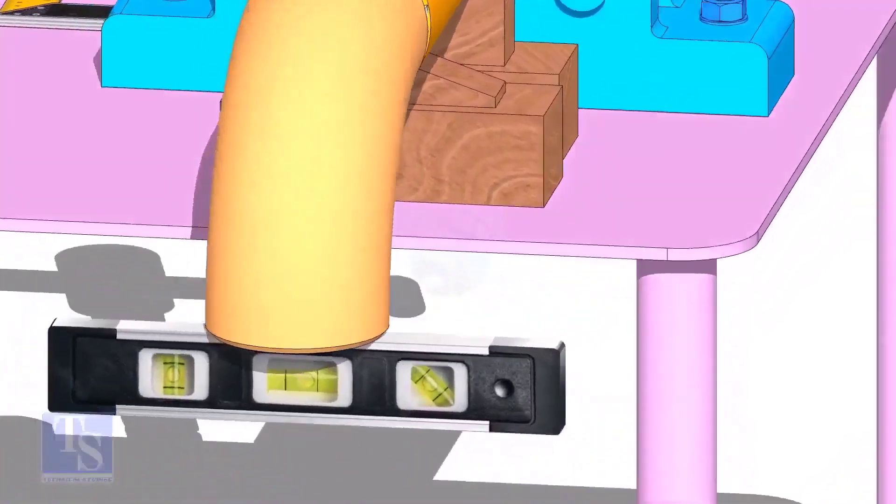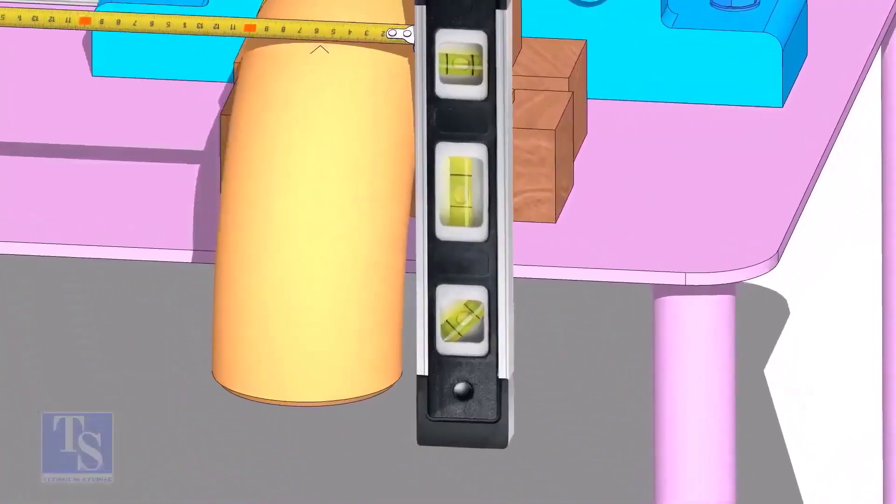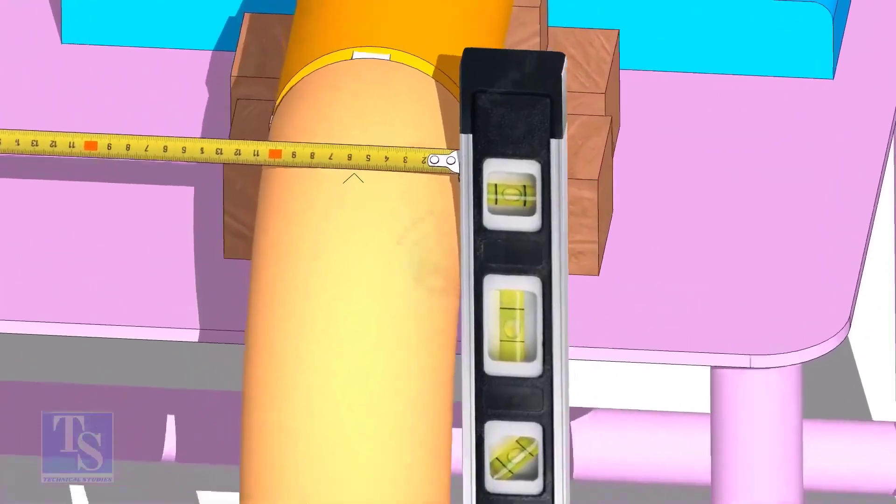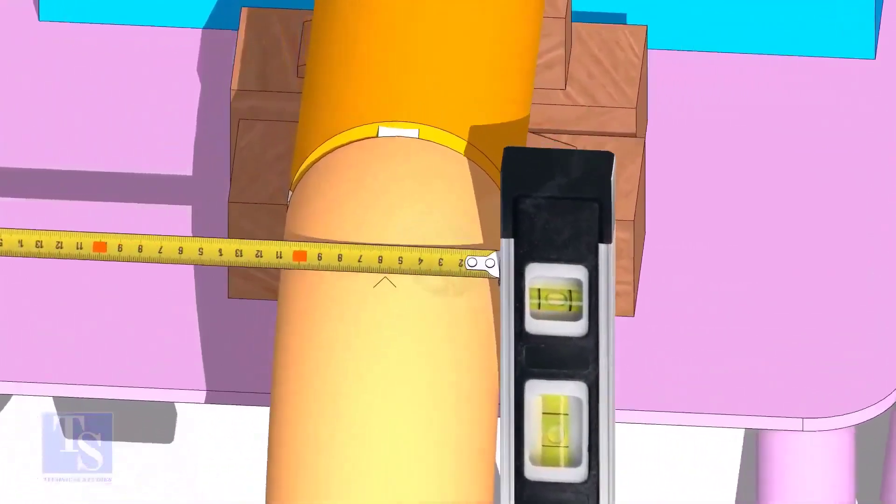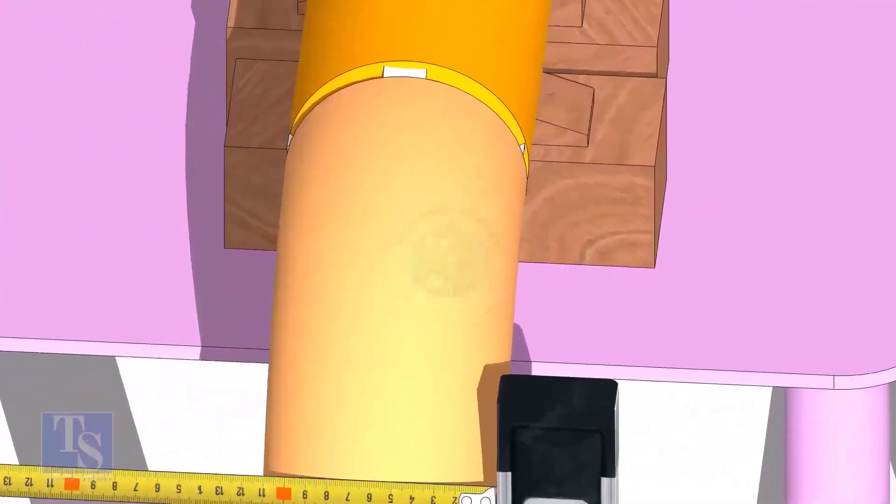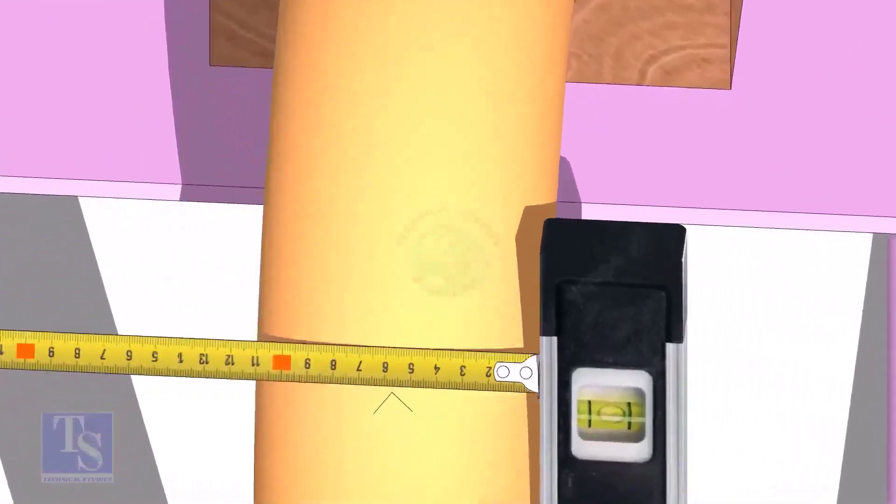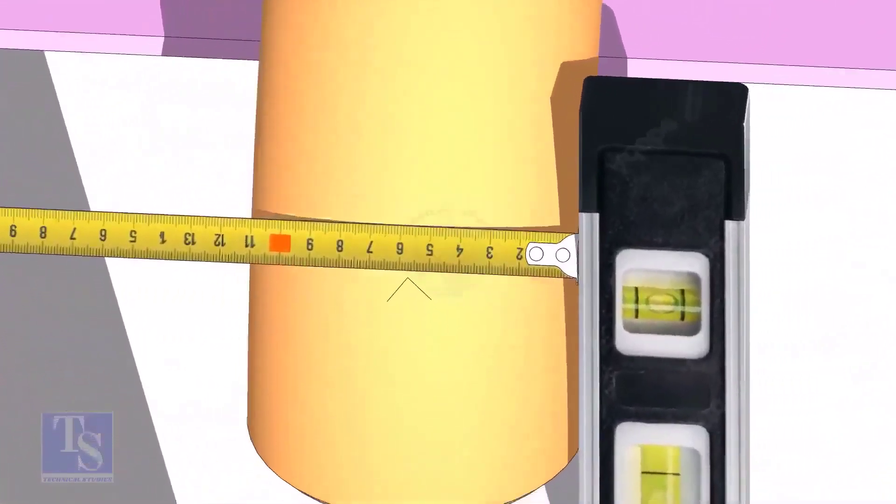Mark the center line of the elbow. OD of a four inch pipe is 114mm. Hold a level bottle at the side of the elbow vertically and mark 57mm on the elbow at least three locations, as shown.